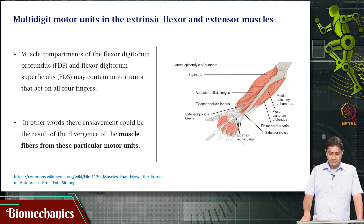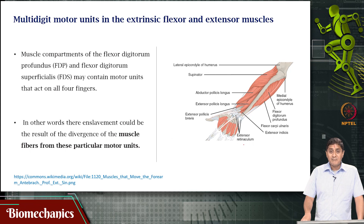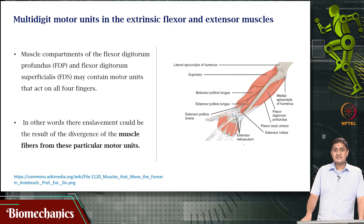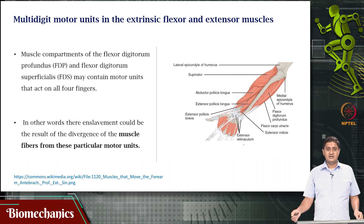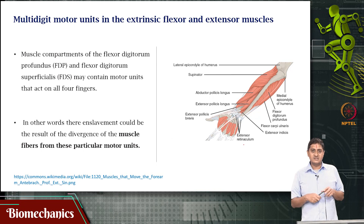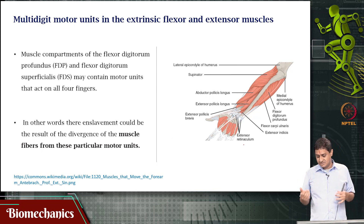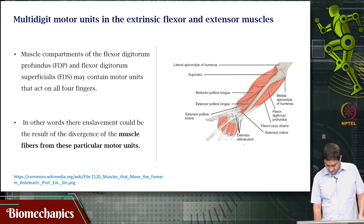Multi-digit motor units are found and demonstrated — there is evidence to suggest this happens at least in the extrinsic flexor and extensor muscles of the human hand. There are many compartments of the same muscle — flexor digitorum profundus and flexor digitorum superficialis — that contain motor units acting on all four fingers. Maybe there is some kind of divergence of muscle fibers from these motor units to four different fingers, causing differences in either movements or forces.